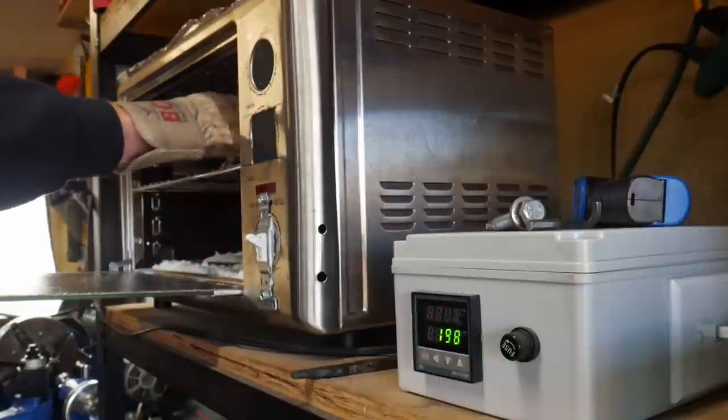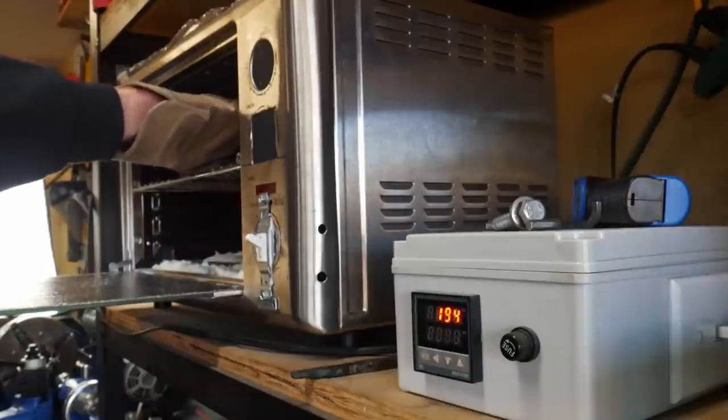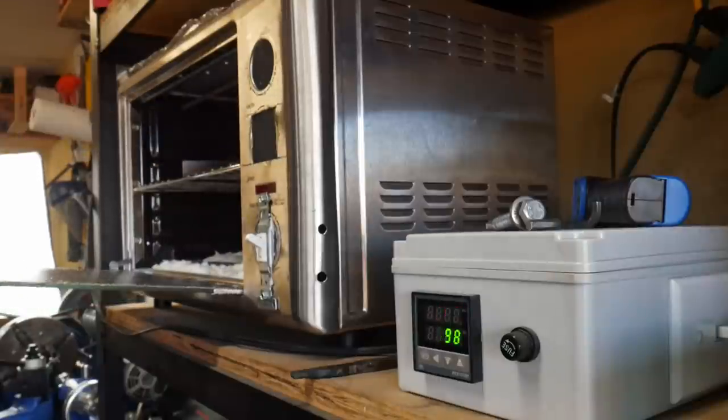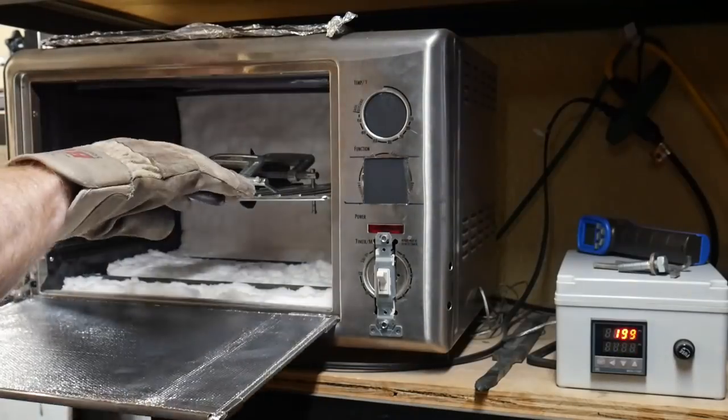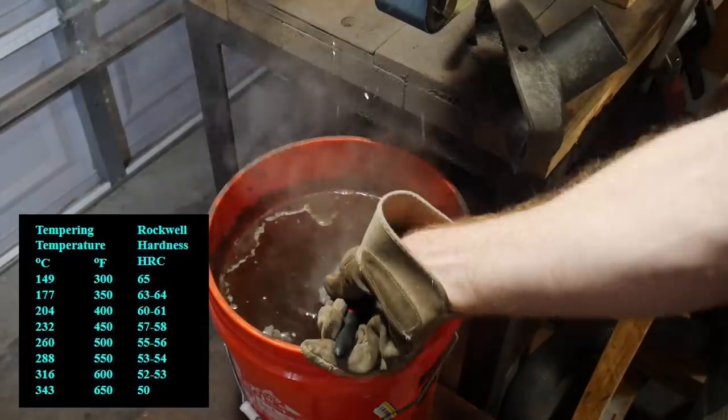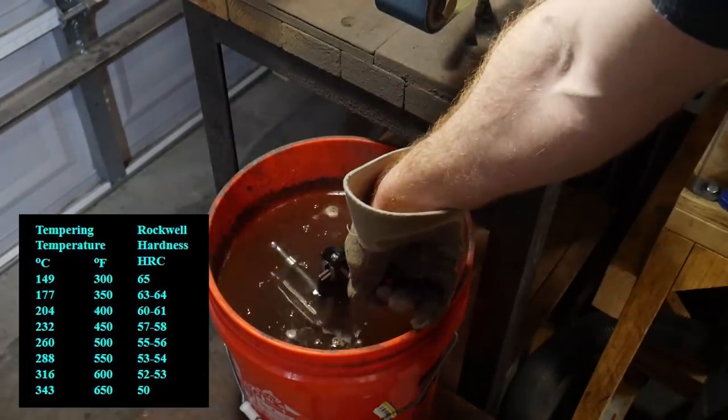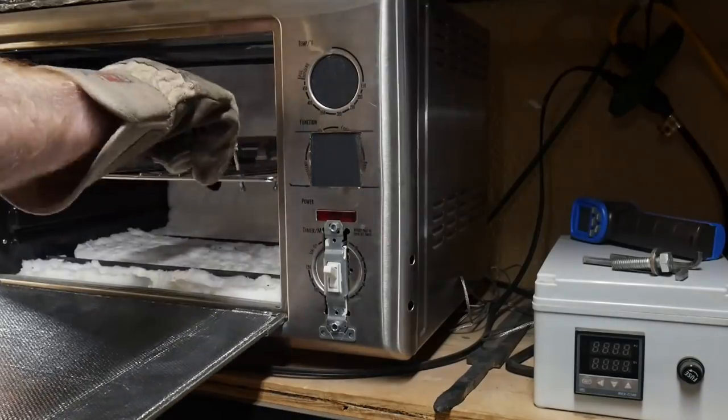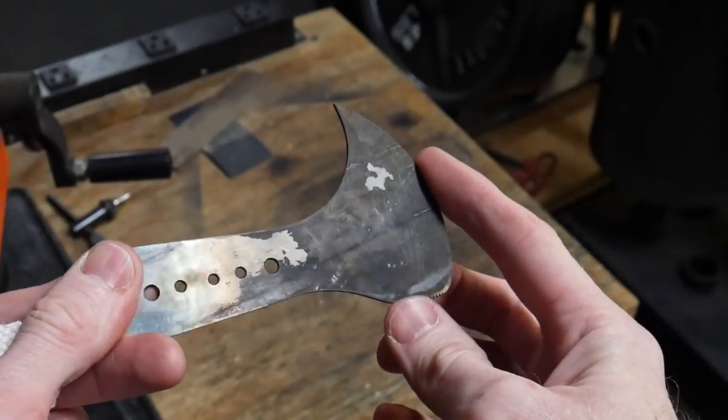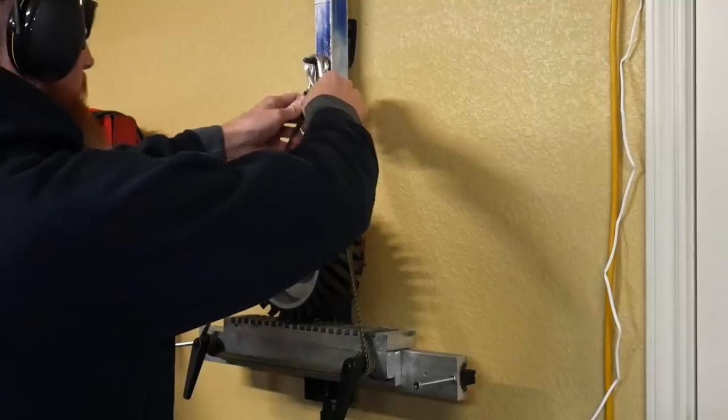I clamped the blade between two pieces of angle iron just to further reduce the risk of catching any warps during the tempering process. We tempered at around 198 degrees Celsius, which is approximately 388 degrees Fahrenheit. The goal here was to achieve a Rockwell hardness around 61 to 62 Rockwell, and this is why I am tempering at a slightly lower temperature than what I normally do with my knives.